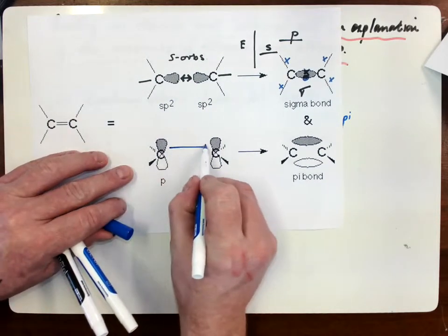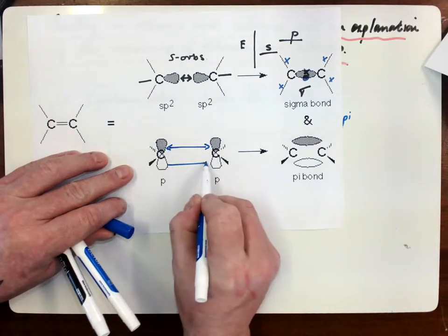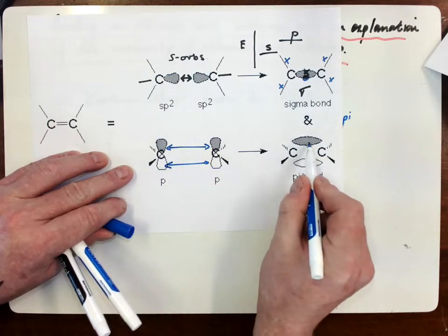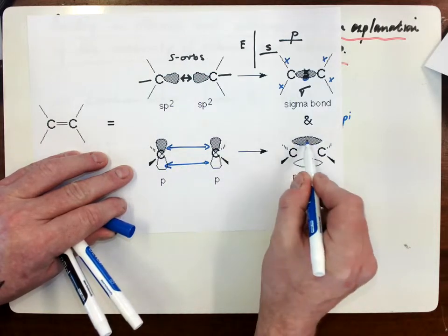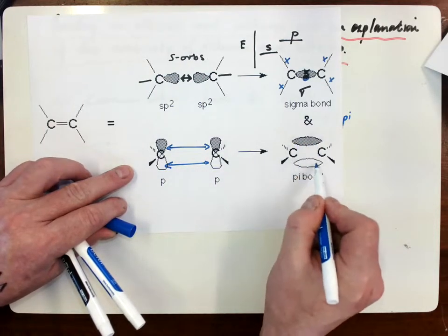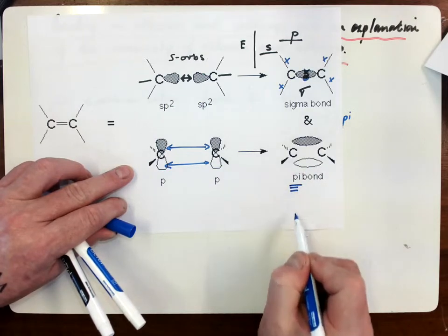Therefore, when these overlap, as they will do, we get this region of high electron density here, which is now referred to as the pi bond.